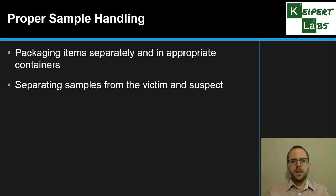So proper sample handling - making sure that we are packaging items separately and in appropriate containers for the type of evidence. This is particularly important when we're keeping samples from the victim and suspect separate from one another, because we don't want any incidental contact to happen between these two things that then would suggest that there was a connection there that may not actually be justified. That has happened in the past, which is why we're discussing this now.